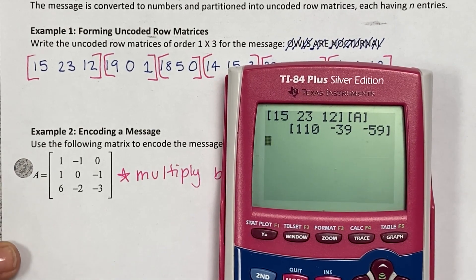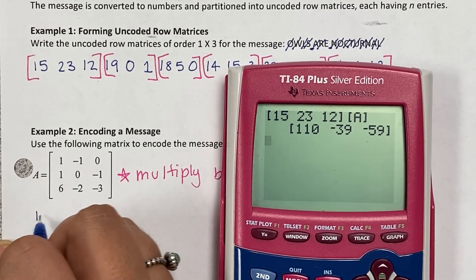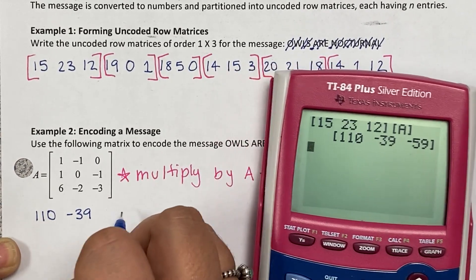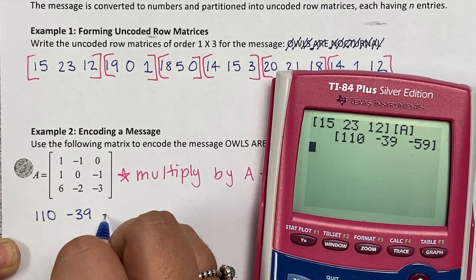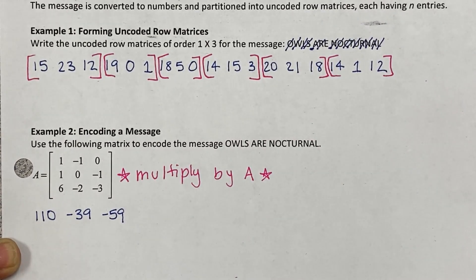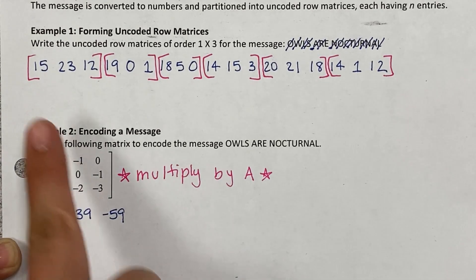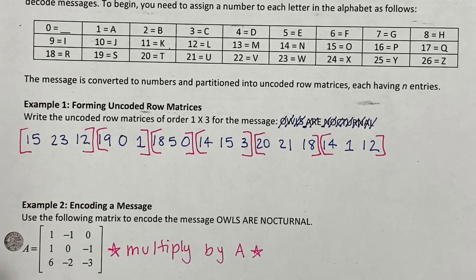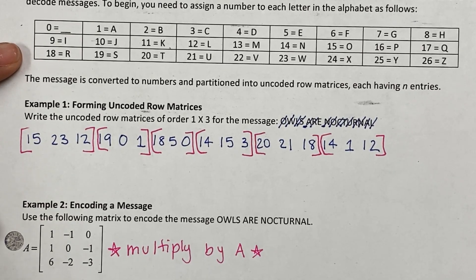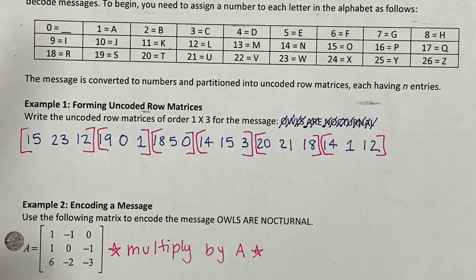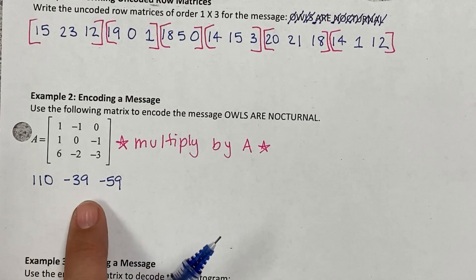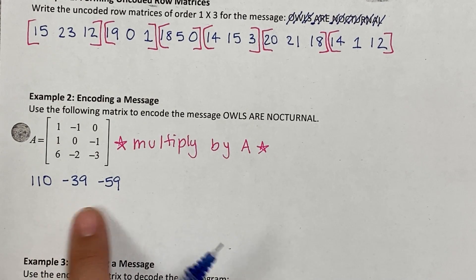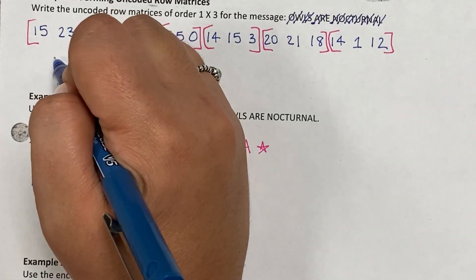Part of the reason we encode a message is so it remains a secret. If you found a piece of paper with the original numbers, you could easily figure out it says 'owls are nocturnal' by assigning 1 to A, 2 to B, and so forth. But when encoded, you get numbers like 110, negative 39, and negative 59 — you would have no idea that spells OWL.